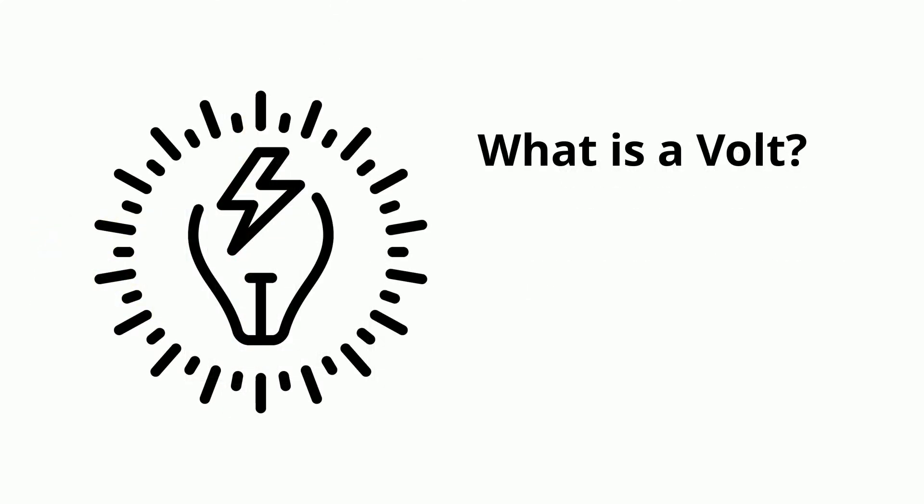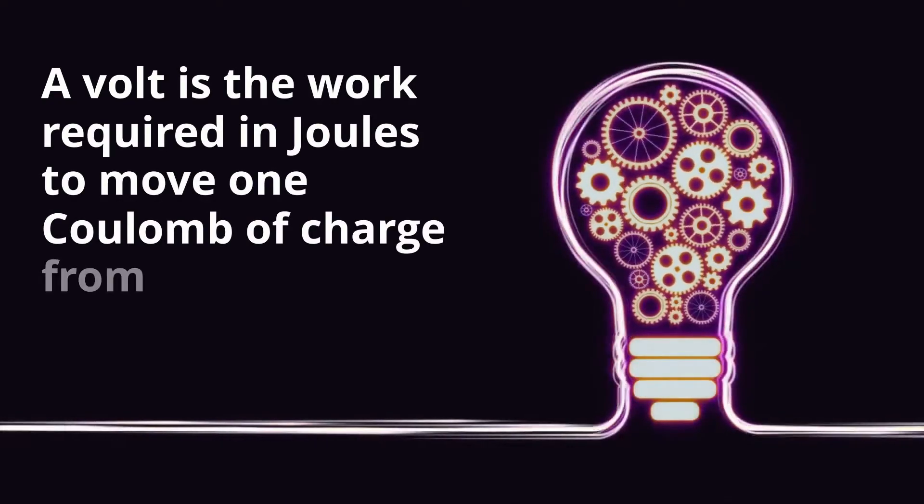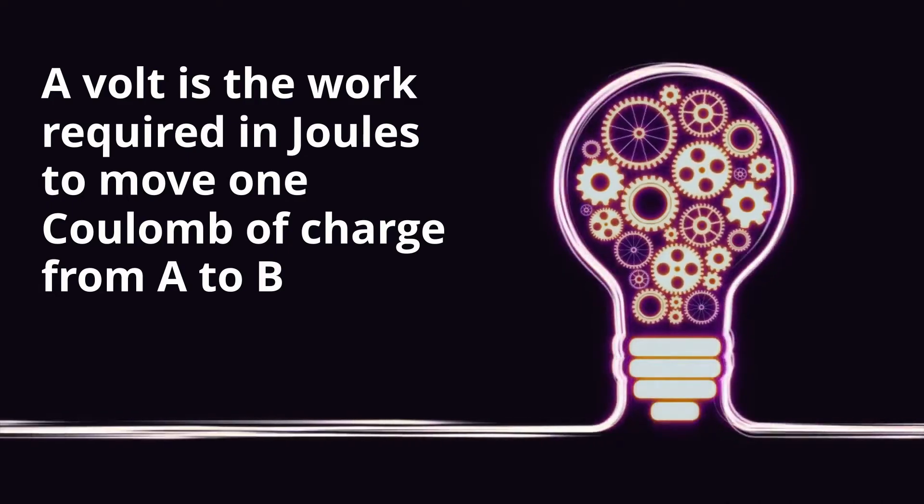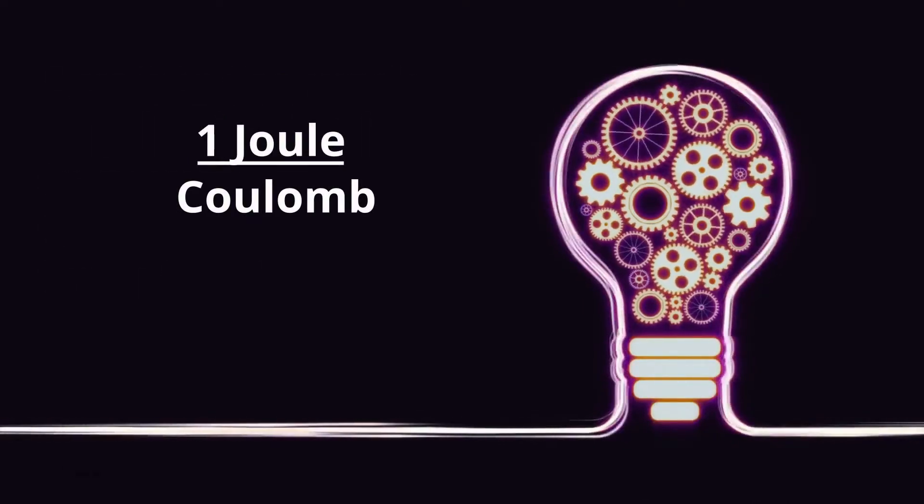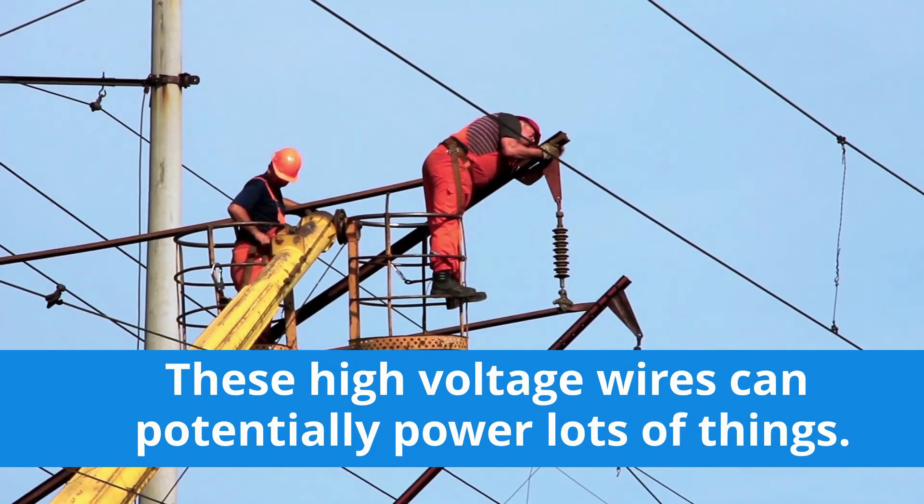Now, what is a volt? A volt is the work required in joules to move one coulomb of charge from A to B. It's expressed as one joule over coulomb. In simple terms, voltage is a measure of potential energy.